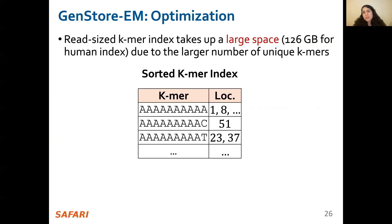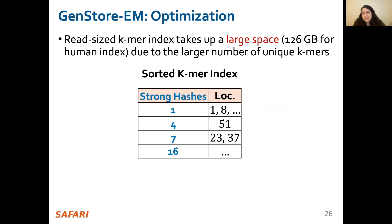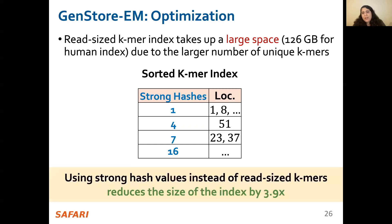Despite the key benefits of the sorted read-sized K-mer index, this index takes up large space due to the large number of unique read-sized K-mers. We further reduce the overhead of GenStore EM by replacing read-sized K-mers with the strong hash value of each K-mer, which can act as a sorting criterion and fingerprint of each read. Using hash values instead of read-sized K-mers reduces the size of the index by 3.9 times. While this index is still larger than the baseline K-mer index used in conventional readmappers, our proposal is feasible for storage processing due to the large capacity available inside the storage and high internal bandwidth of modern NAND flash-based SSDs.